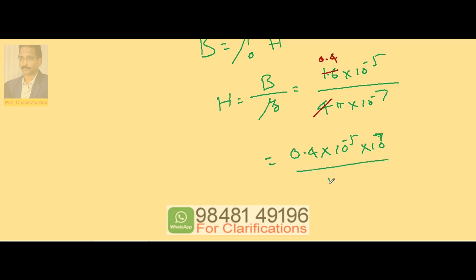minus 7 goes to the numerator, divided by π. So this is 0.4 × 10² by π, or nothing but